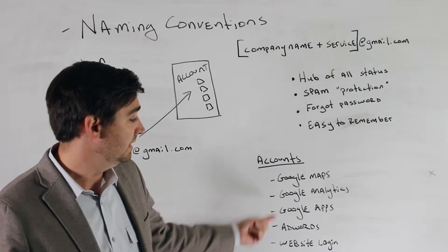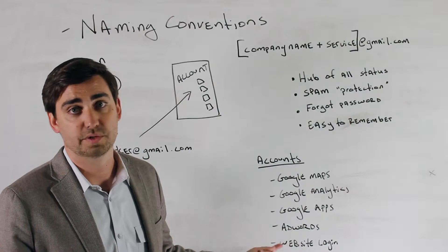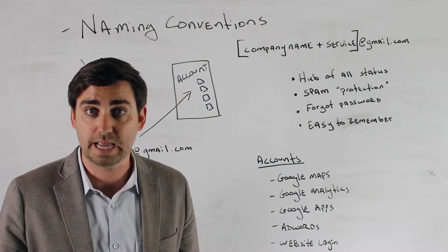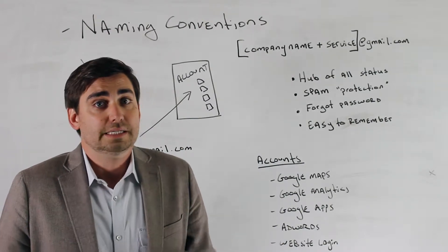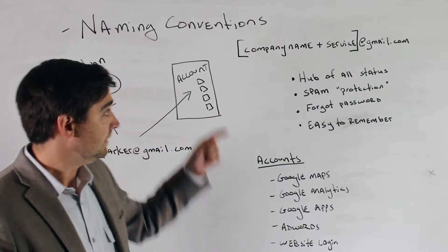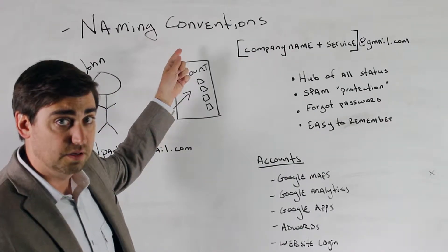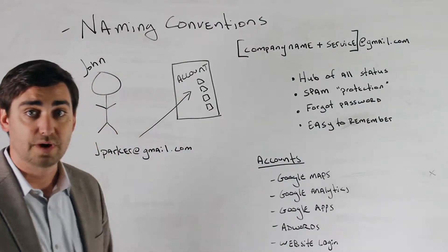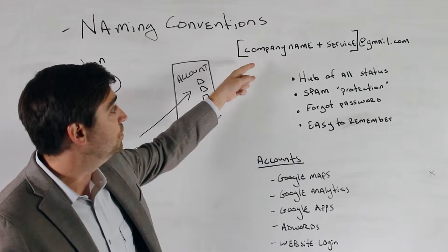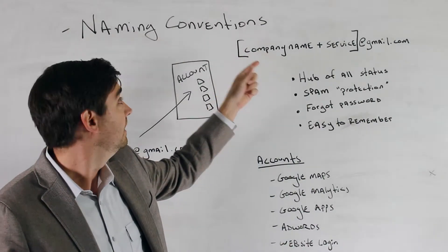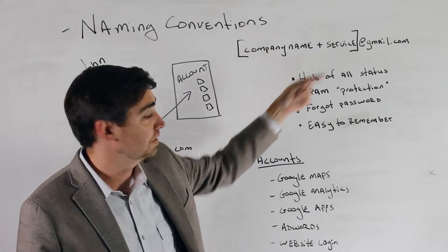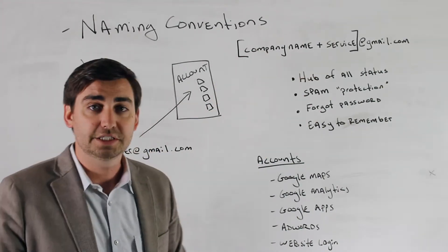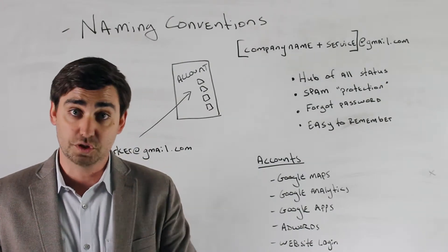The second pitfall is that John Parker, since he set it up, may have access to all of your different accounts — and some of these accounts hold credit card numbers. We're not assuming people are bad or going to mess with your accounts once they're gone, but let's not make assumptions. So the naming convention when you're setting up accounts with Maps, Analytics, Apps, AdWords, or even your website login is to build a specific convention like 'companyname+service@gmail.com' or 'companynamemarketing@gmail.com.'